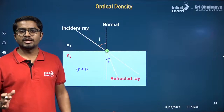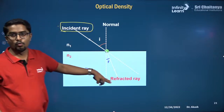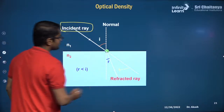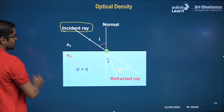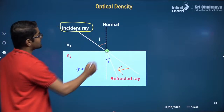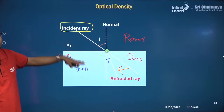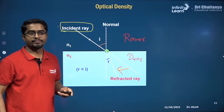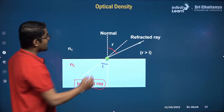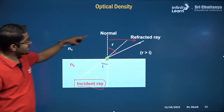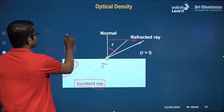There is a term called optical density. If the incident ray going from medium 1 to medium 2 bends towards the normal, then medium 2 is called the optically denser medium and medium 1 is optically rarer. If the refracted ray bends away from the normal, then medium 1 is denser and medium 2 is rarer. There are two values N1 and N2, which are the refractive indices of the two media.